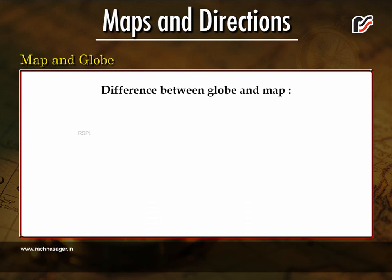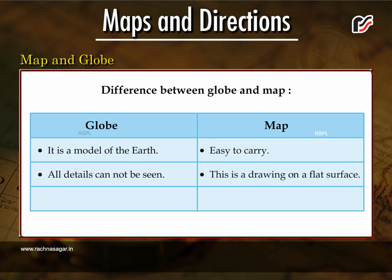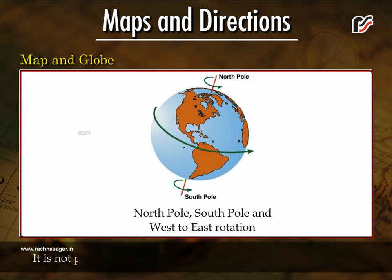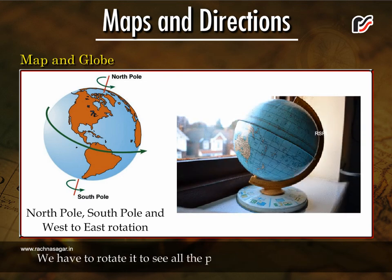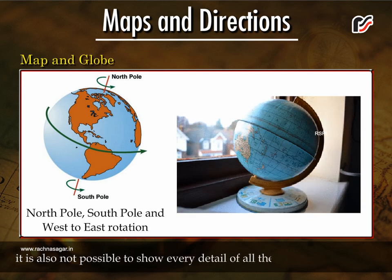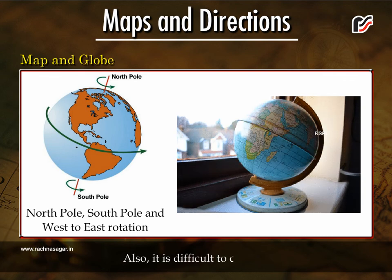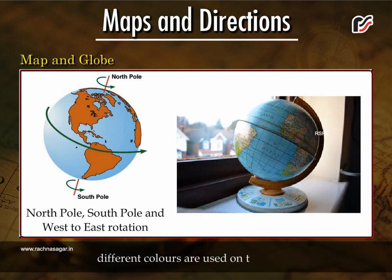Difference between map and globe. A globe is a model of the earth and is difficult to carry everywhere. A map is a drawing on a flat surface and is easy to carry. All details of the earth can be seen on a map, whereas all details cannot easily be seen on a globe. It is not possible to see all the places on a globe at the same time — we have to rotate it. Also, it is difficult to carry a globe. To show different countries, continents and water bodies, different colours are used on the globe.